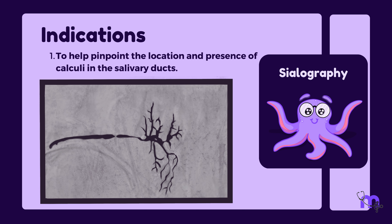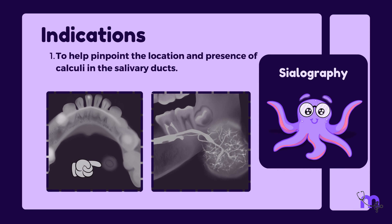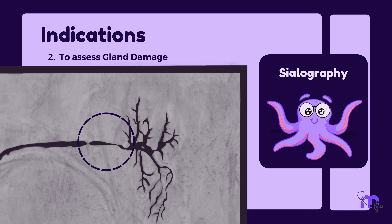Let us understand the common reasons why sialography is indicated and situations where it is contraindicated. Sialography becomes a valuable tool in various situations, such as to help pinpoint the location and presence of calculi in the salivary ducts. These can be either visible as radio-opaque or radiolucent structures.